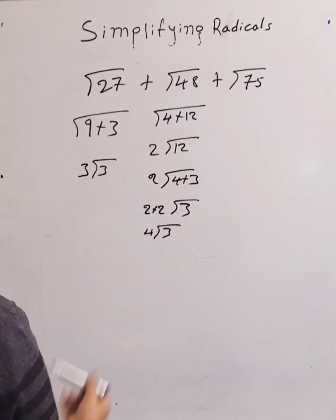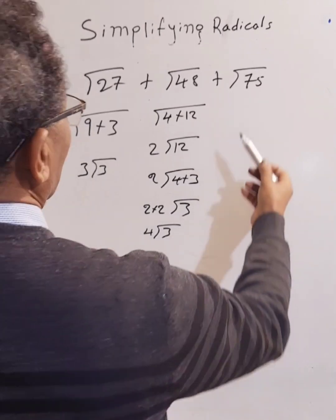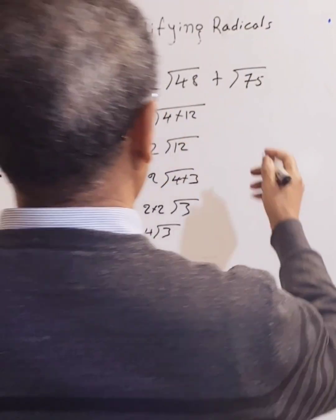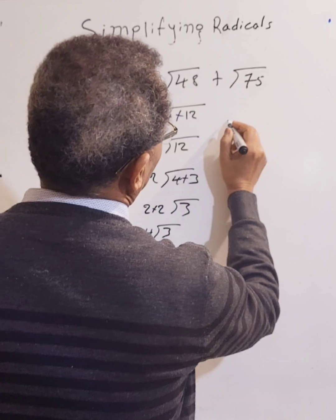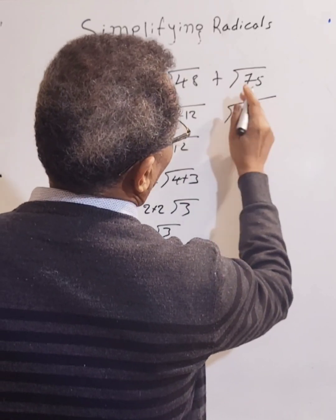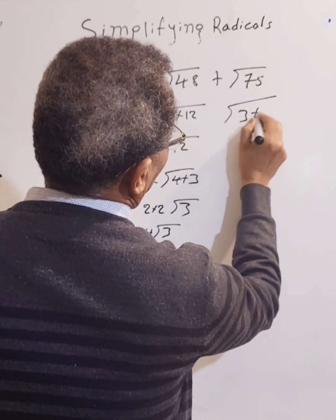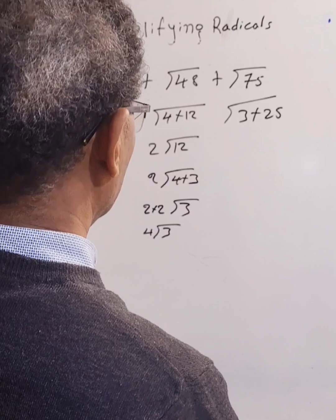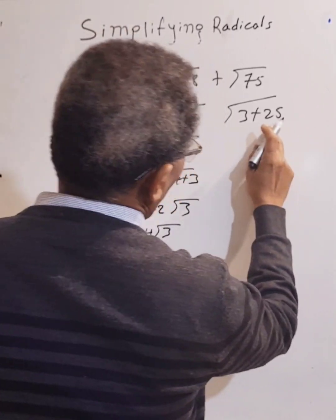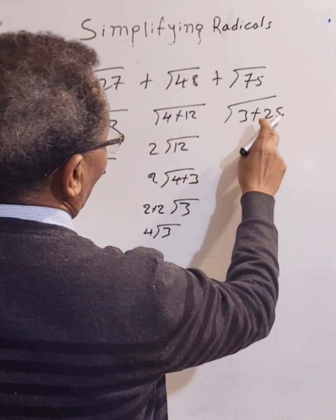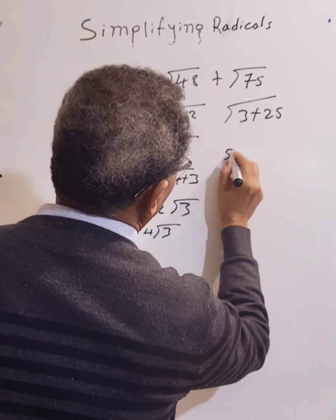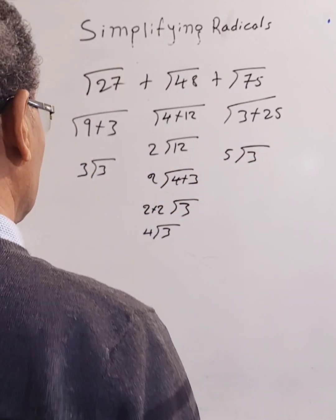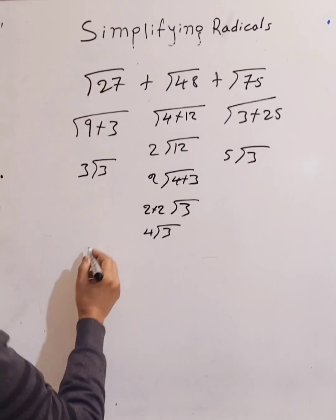Now for √75: 75 is 3 times 25, and the square root of 25 is 5. So √75 simplifies to 5 root 3.